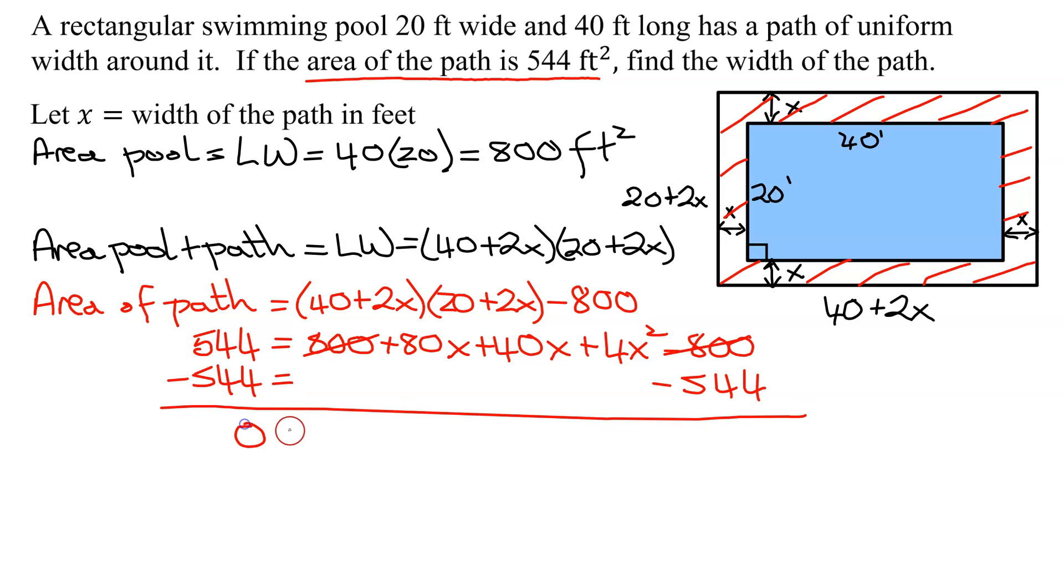And I get 0 equals, we need to write this in descending order. So I'm going to have 4x squared. 80x and 40x is 120x minus 544.